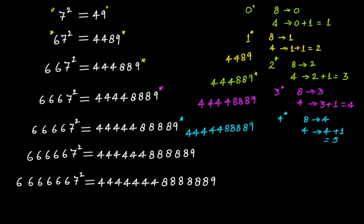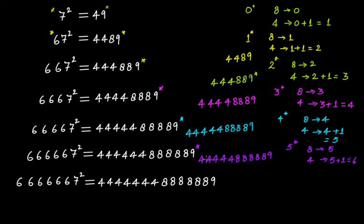For 666667: write 9 here. We have five 6s, so number of 8s will be five, and number of 4s will be five plus one, that is six. Write five 8s and six 4s. So the main thing is that the number whose square you are taking should have 7 at the units place, and only 6 at all other places. Then you can find the square of those numbers using this pattern.